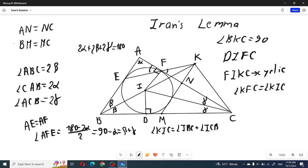And this is clearly β + γ. We have shown that both of these angles must be β + γ, and so K must be on this cycle and angle IKC must be 90 degrees. After we know that this is 90 degrees, now let's show that K, N, M are collinear.